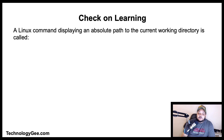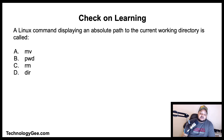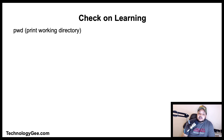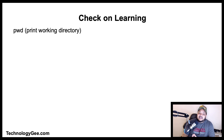Final question: A Linux command displaying an absolute path to the current working directory is called what — mv, pwd, rm, or rmdir? You might not get it if you don't already know it, but the correct answer is pwd, which stands for Print Working Directory. Visit my website to review all the Linux commands you'll need to know.